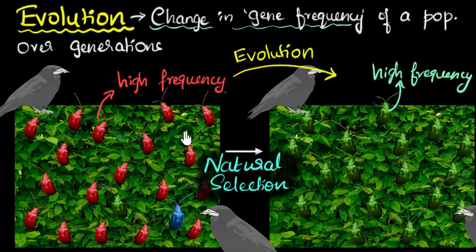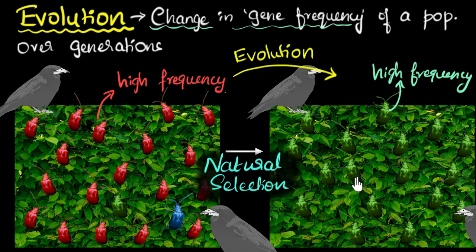Let's look at some important features of evolution. One important thing is that evolution only makes sense over a population. It's wrong to say that an individual beetle evolved — that makes no sense. It's the population of the beetles that has evolved.